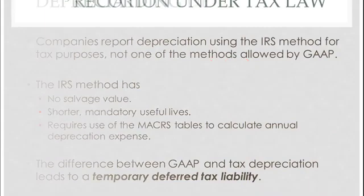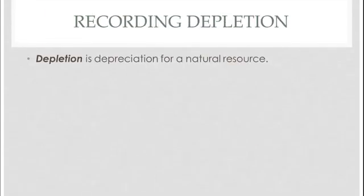The next concept that we want to talk about is called depletion. Depletion is our fancy name for depreciation of a natural resource. So we're talking about things like copper mines and gold mines, and if you're extracting coal, or if you have a right to extract lumber, or right to a certain fishery or fishing area, that's what we're talking about with depletion, because you're depleting or reducing this natural resource.